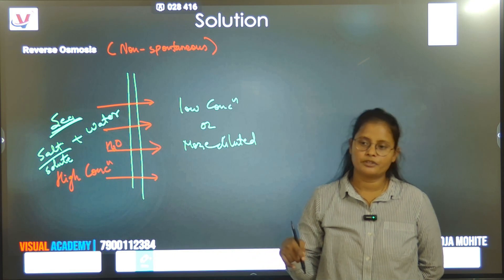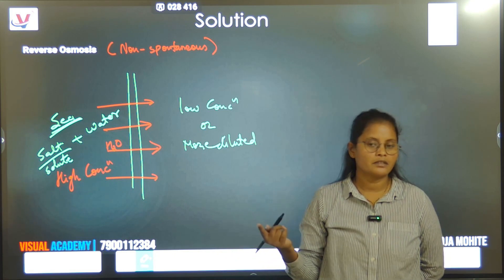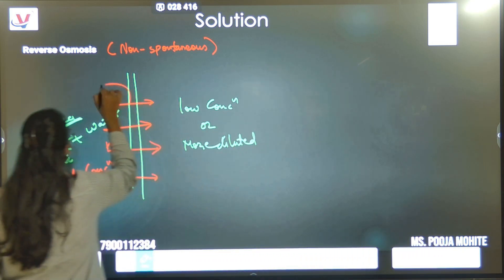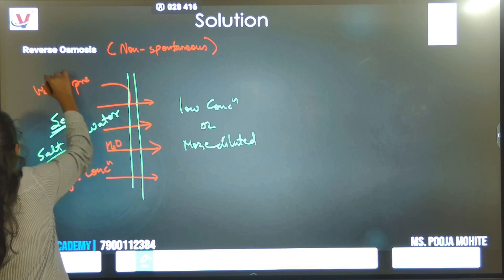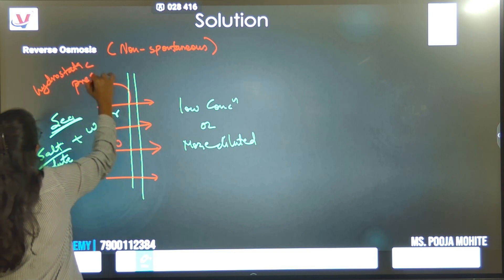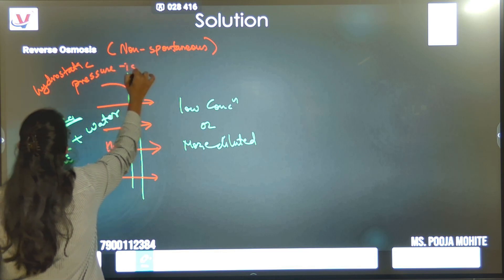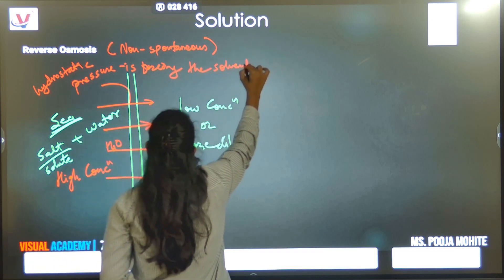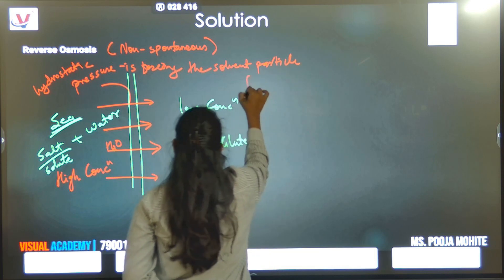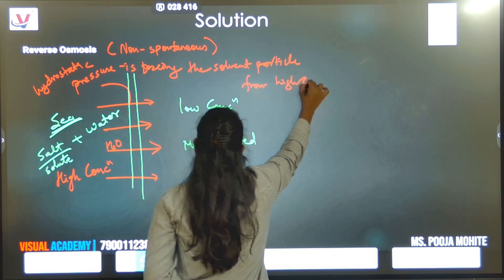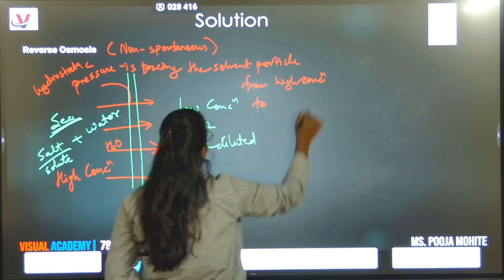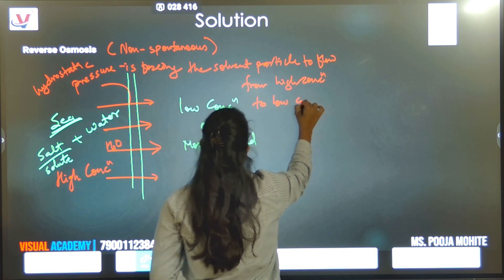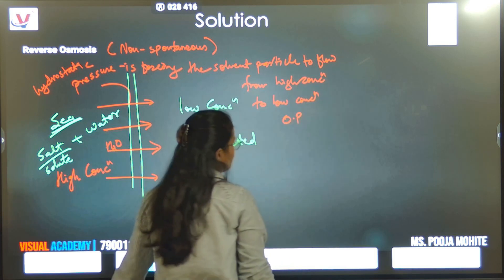And that pressure is called osmotic pressure. Here the hydrostatic pressure is forcing the solvent particles from high concentration to low concentration. Movement from high concentration to low concentration is what we call reverse osmosis.